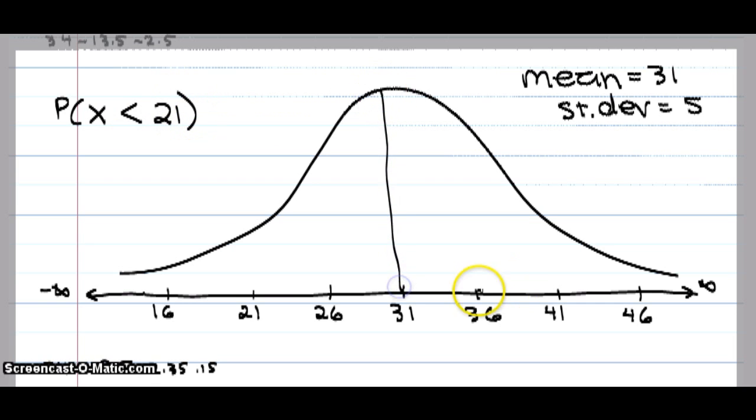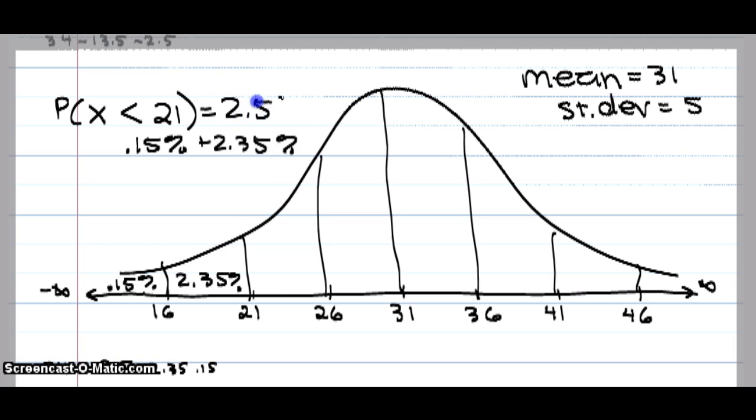If we draw our slices for the empirical rule and put our percentages in there, I don't have to fill in anymore. I just add those two. And I know this is 0.15% plus 2.35% or 2.5%. I hope this helps you out a lot. Let's try a lot with the empirical rule.